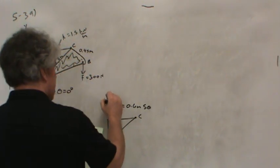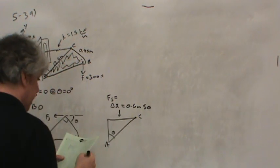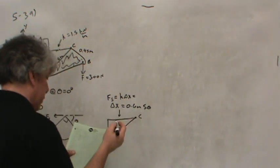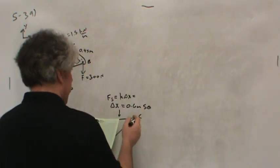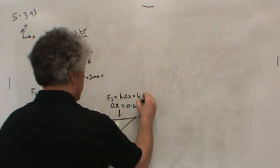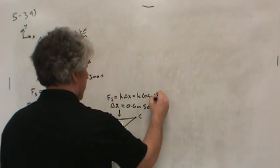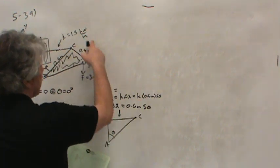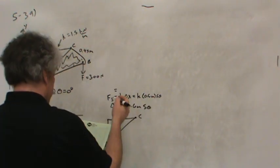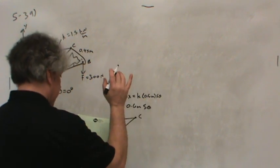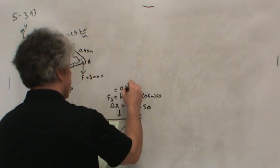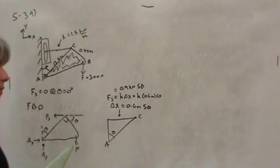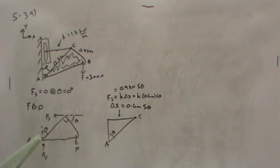This side is an important length because it represents how far the spring is stretched. Notice it will always be 0.6 meters multiplied by the sine of theta. Now the force in the spring will always be K delta X. So the force in the spring can always be written as K times 0.6 meters sine of theta. If we multiply 1.5 by 0.6, this comes out at 0.9 kilonewtons multiplied by sine theta.